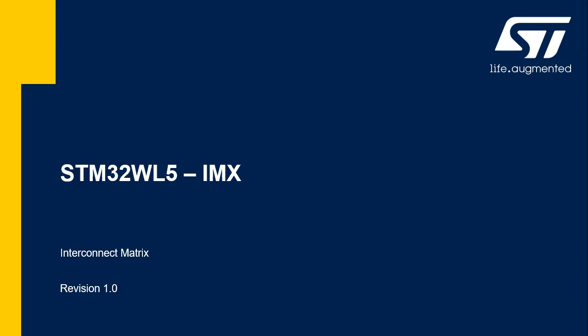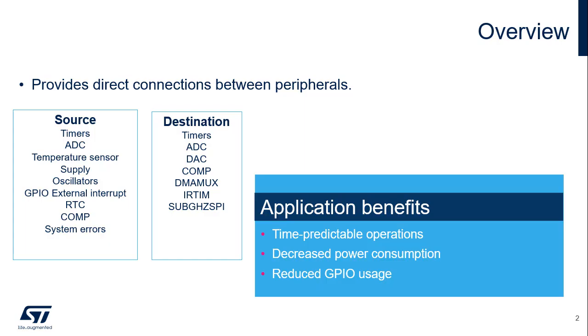Hello, and welcome to this presentation of the STM32 Interconnect Matrix. It covers the main features of this matrix, which is widely used to connect various internal peripherals between each other. The Interconnect Matrix, integrated inside STM32 products, provides direct connections between peripherals.